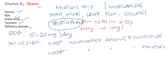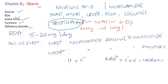NAD+ can accept one full hydrogen atom and one electron. Since NAD+ already carries a positive charge, when it accepts one electron and one hydrogen atom, it becomes NADH + H+.